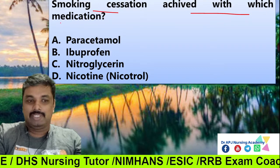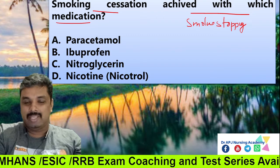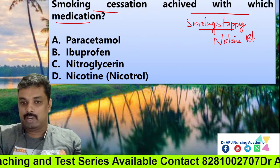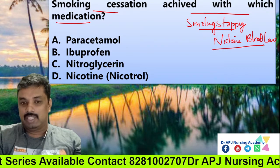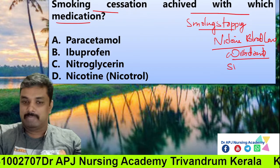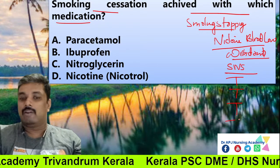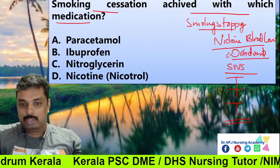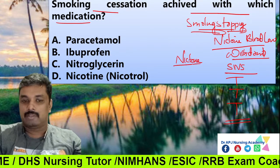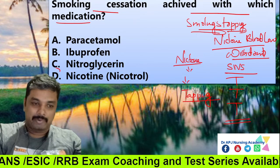Next question: Smoking cessation — achieved with which medication? Smoking cessation is the stopping of smoking. When nicotine levels become low in the blood and the patient stops, they experience withdrawal symptoms including tachycardia, hypertension, and tremor.